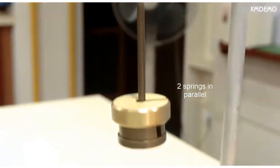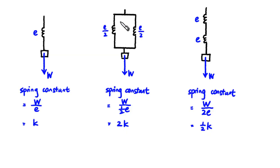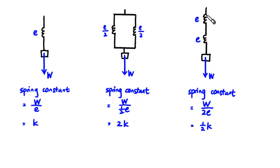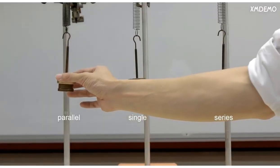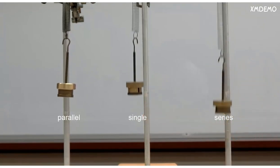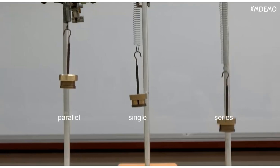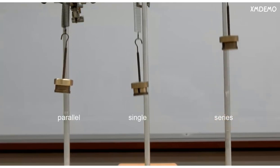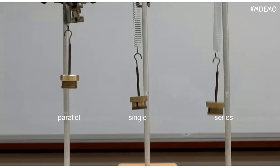So if you connect two identical springs in parallel, you effectively get a composite spring with double the spring constant. If you connect two identical springs in series, you get a composite spring which has half the spring constant — it's only half as stiff. You can see this in this video here. The oscillation with the springs in parallel has a much higher frequency because it's effectively a stiffer spring. The oscillation with the springs in series has a lower frequency — you have effectively a looser spring.